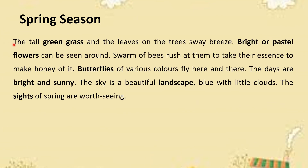The second body paragraph uses the sense of sight: 'The tall green grass and the leaves on the trees sway in the breeze. Bright or pastel flowers can be seen around.' You can notice that we are using sensory details — one or two of the five senses. Here we are using the sense of sight. 'Swarms of bees rush at flowers to make honey. Butterflies of various colors fly here and there. The days are bright and sunny, the sky is a beautiful blue landscape with little clouds. The sights of spring are worth seeing.'